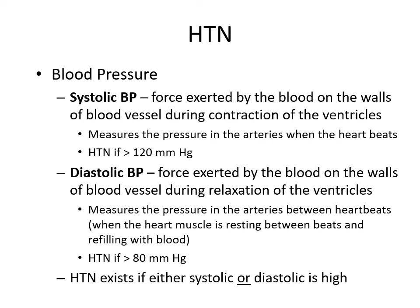Systolic blood pressure is the force exerted by the blood on the walls of the blood vessel during contraction of the ventricles — this measures the pressure in the arteries when the heart's beating, and is considered hypertensive if over 120 mmHg. Diastolic blood pressure is the force exerted during relaxation of the ventricles — this measures pressure in the arteries between heartbeats, and is considered hypertensive if over 80 mmHg. Hypertension exists if either systolic or diastolic pressure is high.